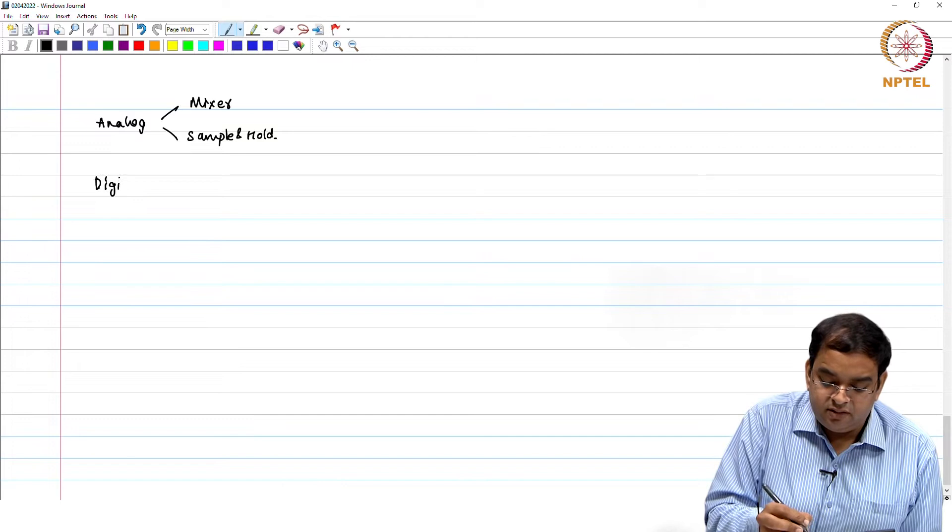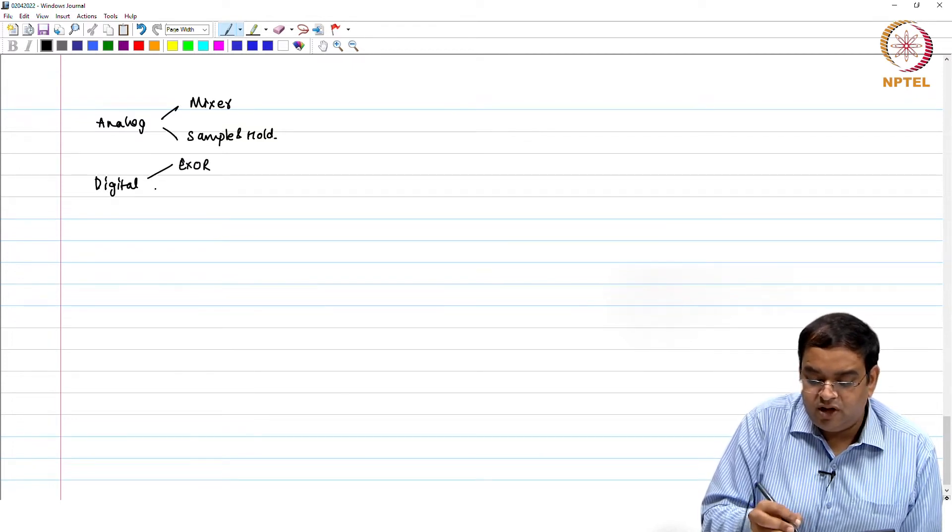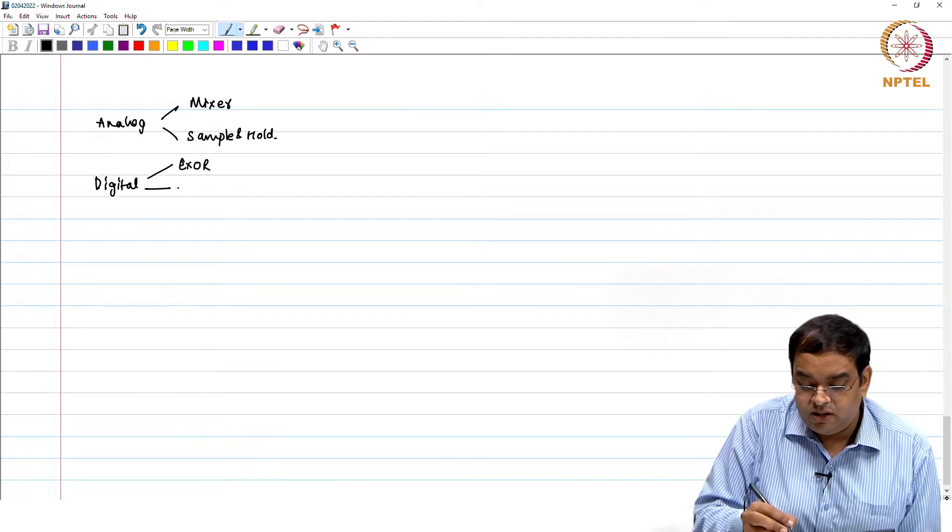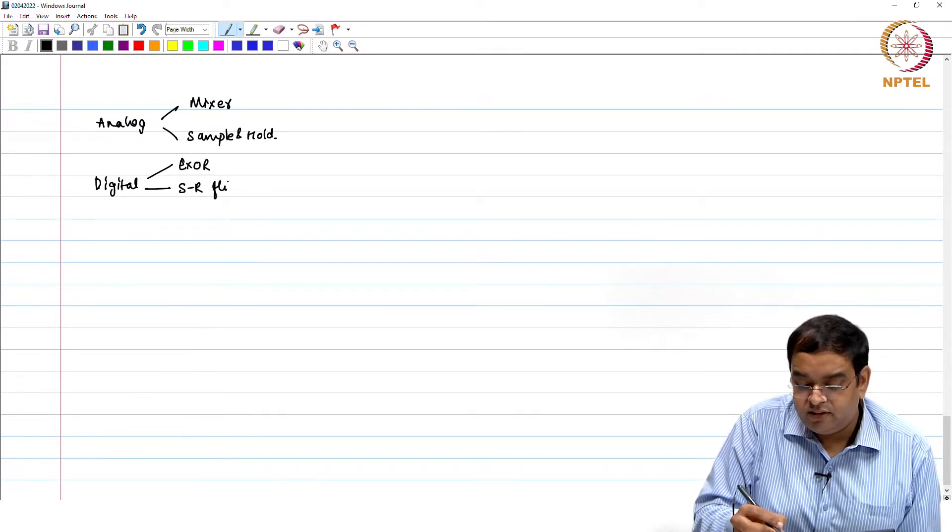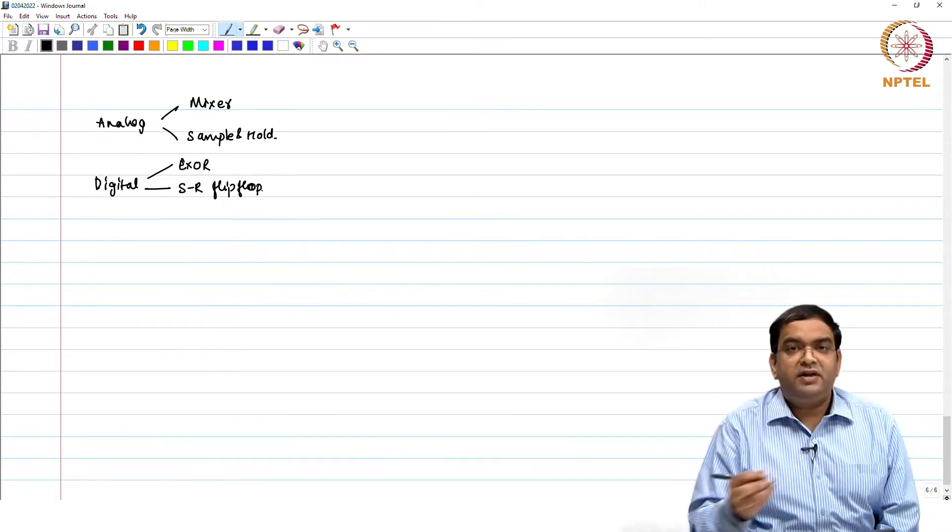In case of digital, we have seen exclusive or gate, we have seen SR flip-flop based phase error detector, and we found the linear range and other things.